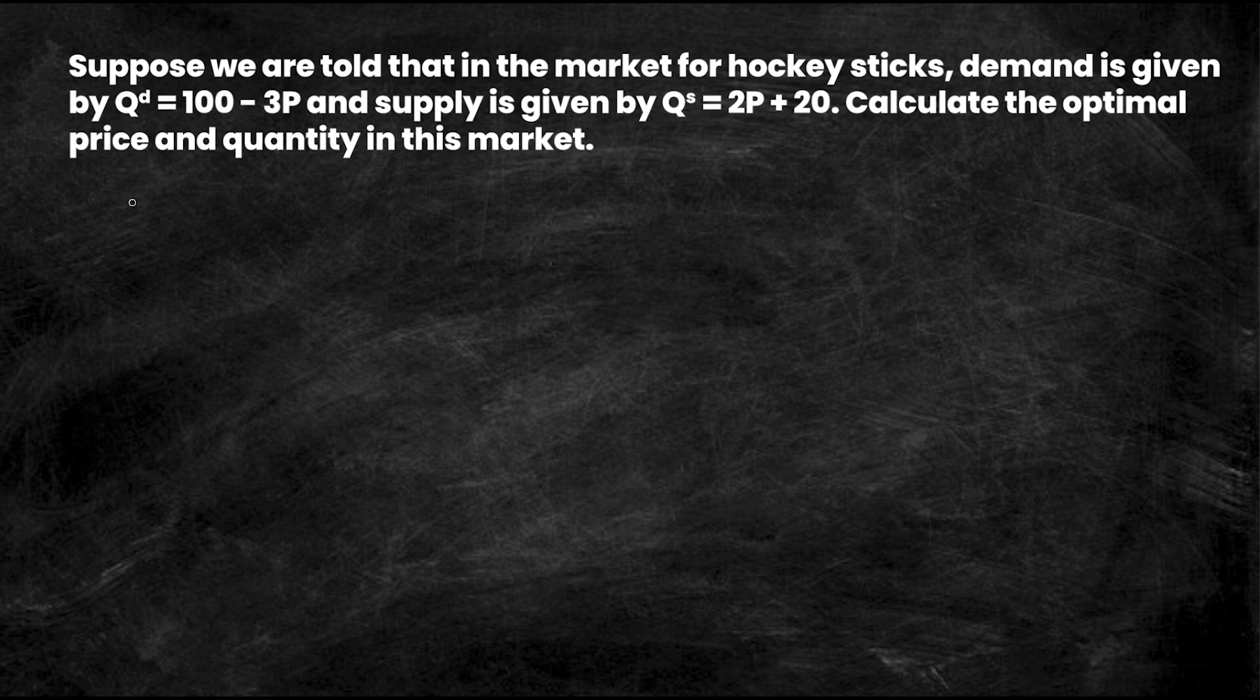All right guys, so we have a problem as follows. Suppose we are told that in the market for hockey sticks, demand is given by QD, so quantity demanded, is equal to 100 minus 3P, and supply is given by QS, so quantity supplied, is equal to 2P plus 20. Calculate the optimal price and quantity in this market.